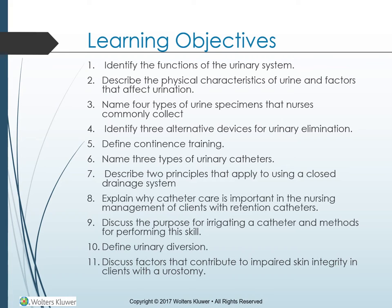Learning Objectives: Identify the functions of the urinary system. Describe the physical characteristics of urine and factors that affect urination. Name four types of urine specimens that nurses commonly collect. Identify three alternative devices for urinary elimination and define continence training. Name three types of urinary catheters. Describe two principles that apply to using a closed drainage system. Explain why catheter care is important in the nursing management of clients with retention catheters. Discuss the purpose for irrigating a catheter and methods for performing this skill. Define urinary diversion. Discuss factors that contribute to impaired skin integrity in clients with a urostomy.